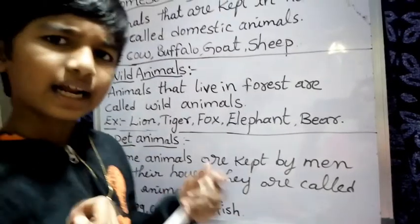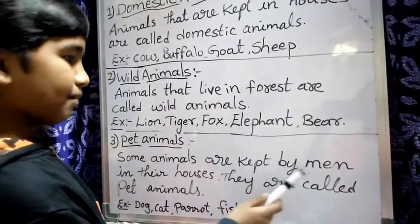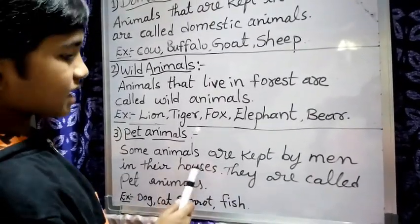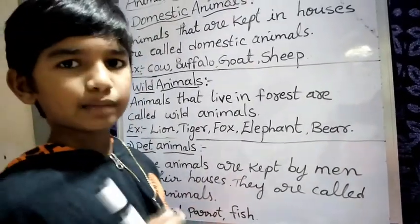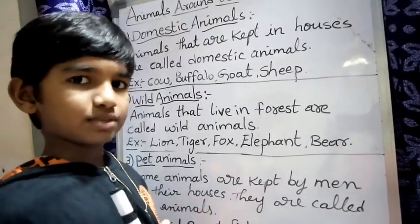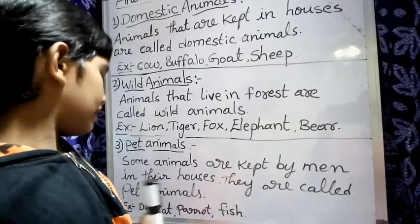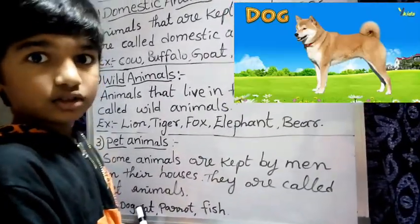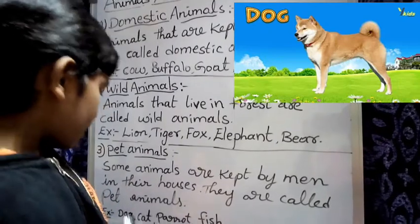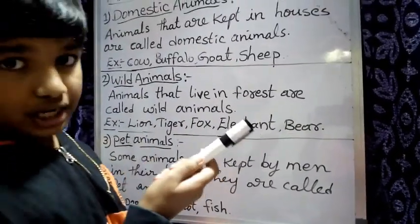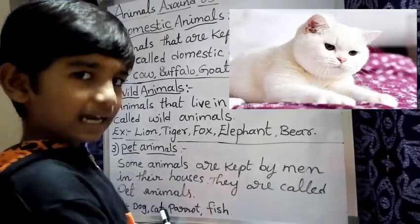What are pet animals? Some animals are kept by people in their houses — they are called pet animals. Now I will show some pet animal pictures — you tell me their names. What is that pet animal? Yes. Dog. Dog protects our house from thieves. Next — what is that pet animal? Yes. Cat.